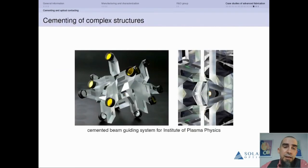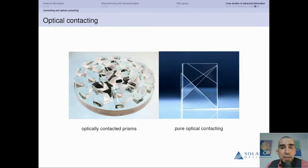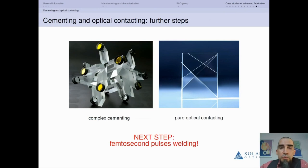The last case of what we do which is not everyday is complex cementing of optical systems. This is a picture of a real device fabricated for Institute of Plasma Physics in Poland - a beam divider and recombiner at the same time. Apart from complex cementing, we do optical contacting in which we are experienced, since we do it for technological purposes. This is a picture of a set of prisms optically contacted to a glass holder for further fabrication, and this is an optically contacted beam splitter. What we are going to do next with optical contacting and complex cementing is start realizing a grant on femtosecond pulse welding.